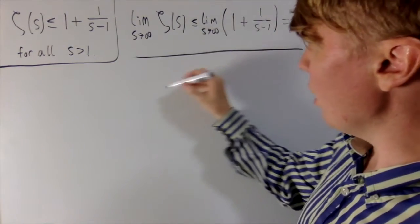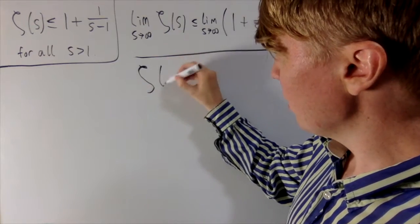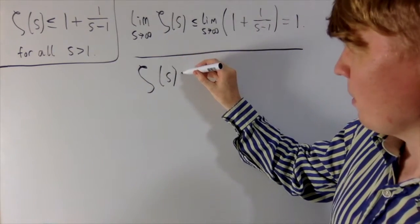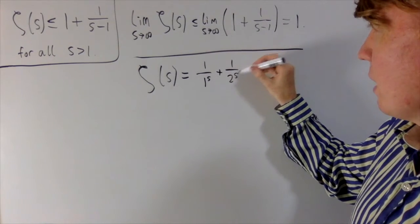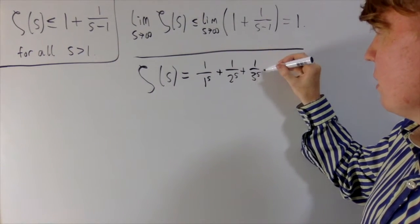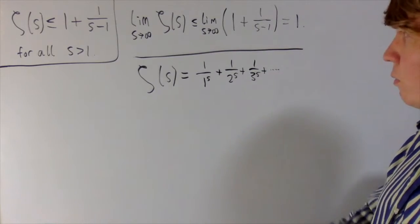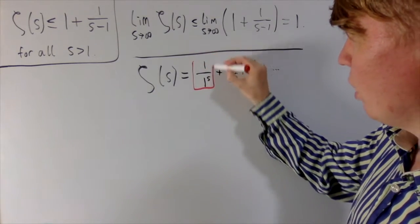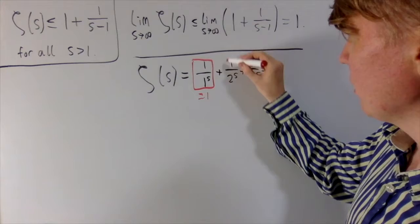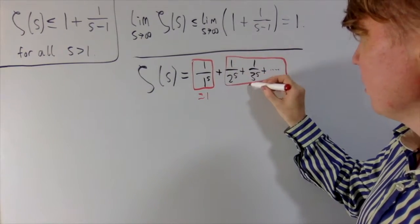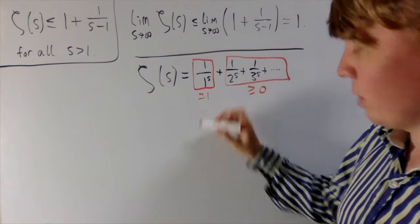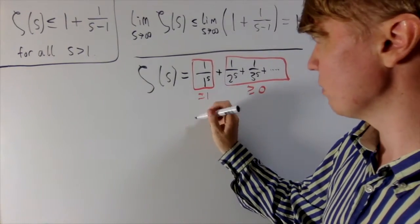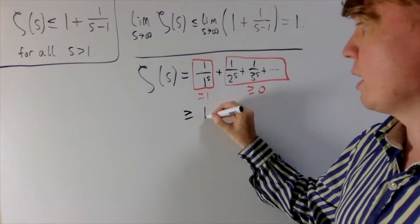And now, to get a lower bound, so zeta of s, you think this is equal to 1 over 1 to the s plus 1 over 2 to the s, plus 1 over 3 to the s, and so on. Now, we've got a term here, this one's just equal to 1, and everything else here is positive. So you've got 1 plus some positive stuff, so your Riemann zeta function for sure, for all s, is greater than or equal to 1.